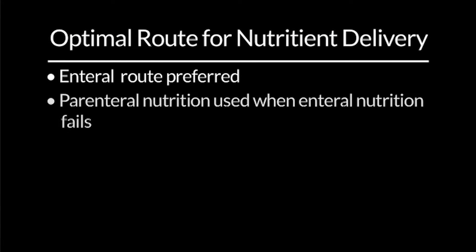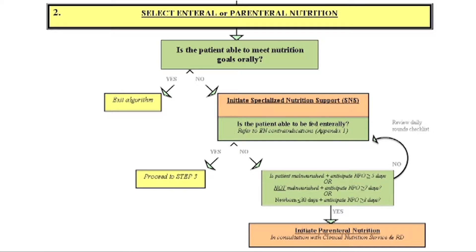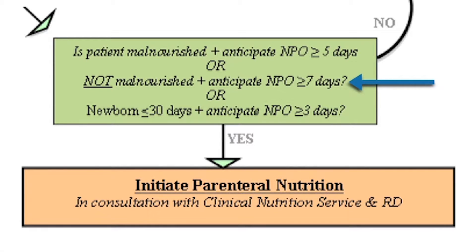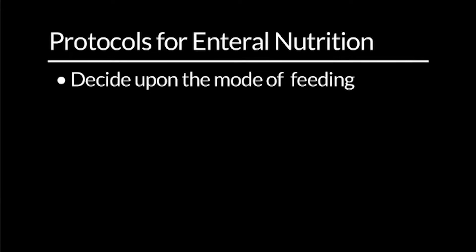At Children's Hospital Boston, we prefer the enteral route in all our patients. Parenteral nutrition is only used when enteral nutrition is anticipated to fail or is contraindicated. The algorithm describes our thresholds for triggering parenteral nutrition, which are quite generous: we use an aggressive enteral nutrition approach, initiating parenteral nutrition only if enteral nutrition is anticipated to fail by the end of seven days in an otherwise well-nourished child, or five days in newborns, or three days in malnourished children. Once the mode of feeding has been determined, initiation and advancement of enteral nutrition follows a protocolized fashion to reach prescribed goals quickly.